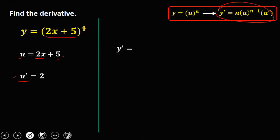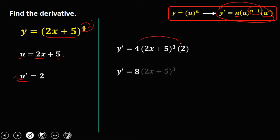Substitute now into the formula. y prime equals n — the exponent, which is 4 — times u, which is (2x + 5), to the power n minus 1, so 4 minus 1 equals 3, then times u prime which is 2. Multiply 4 and 2: y prime equals 8 times (2x + 5) to the power 3. This is the derivative.